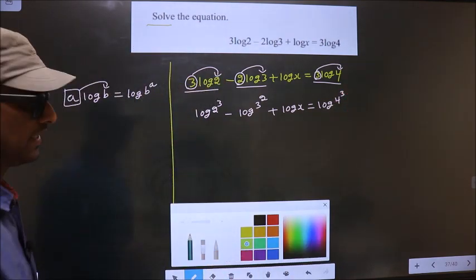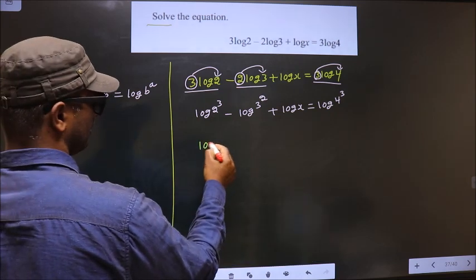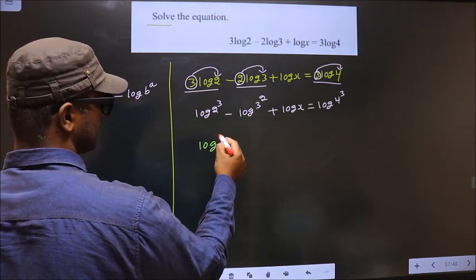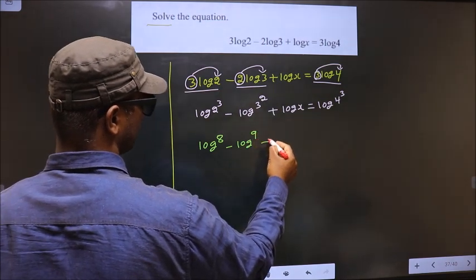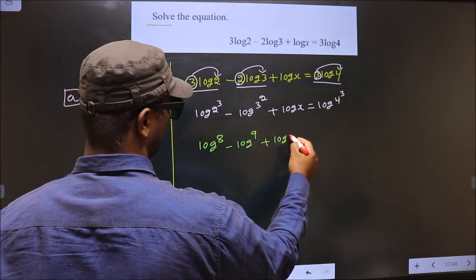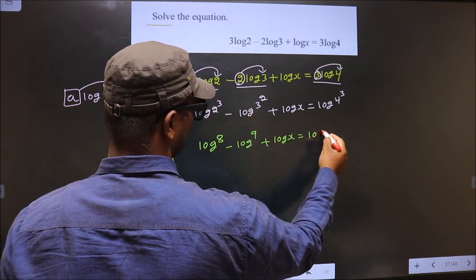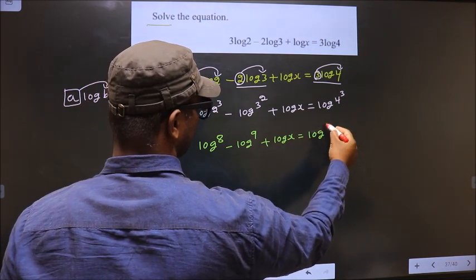Log 2 to the power 3 is log 8, minus log 3 squared is log 9, plus log x equals log 4 to the power 3, which is log 64.